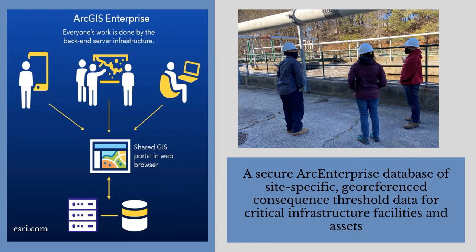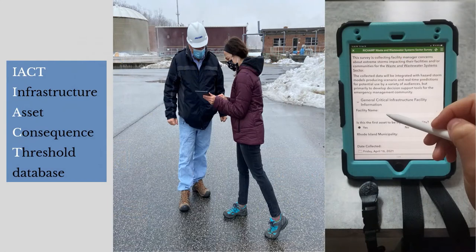The foundation of RIECHAMP is a secure Arc Enterprise database of site-specific geo-referenced consequence threshold data for critical infrastructure facilities and assets — this is IACT, the Infrastructure Asset Consequence Threshold Database. IACT geo-referenced site information is collected directly from infrastructure managers using a mobile app, ensuring subsequent model outputs are relevant to facility operators' own emergency planning and decision-making.